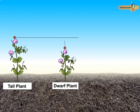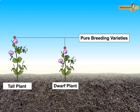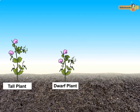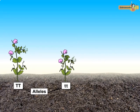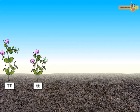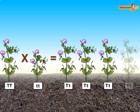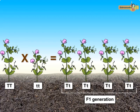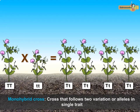Hence Mendel termed the tall and dwarf plants as wild type or pure breeding varieties. The different forms of a gene that determine alternate traits or characters are called alleles. When a pure breeding tall plant is crossed with a pure breeding dwarf plant, all the progeny of the first filial or F1 generation are tall. This cross is called a monohybrid cross.